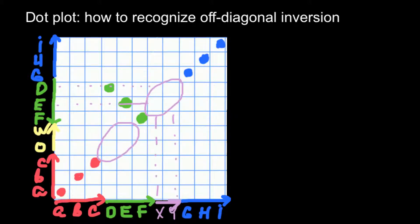I hope that most of you were able to solve this problem, and for those who didn't, I hope you now better understand what off-diagonal inversion is and what it means when you see a picture like this. This is all for today. Thank you for your attention. Please subscribe for my new videos, which I post almost every day. Thumbs up if you like this video, and please write your comments and questions if you have any. See you in the next video. Goodbye!